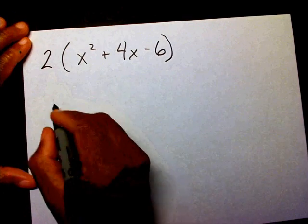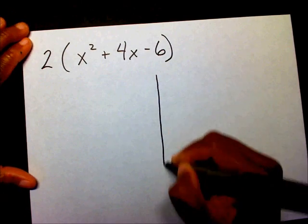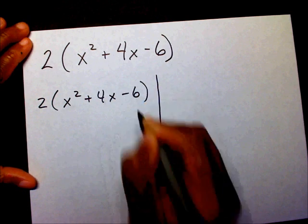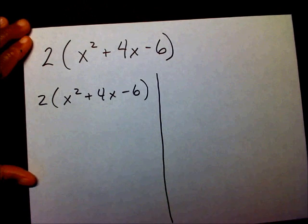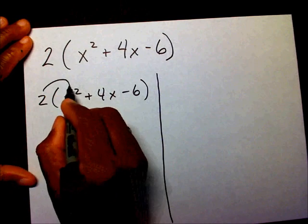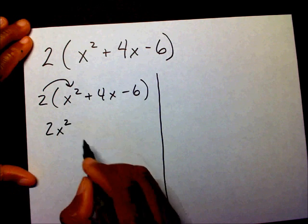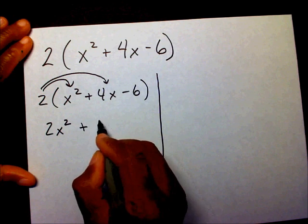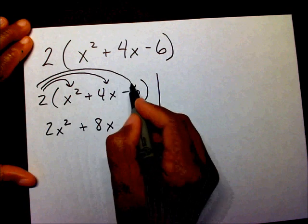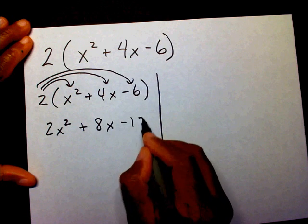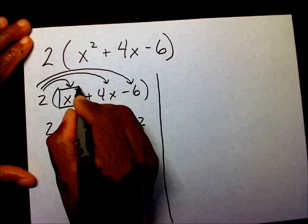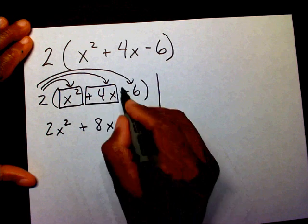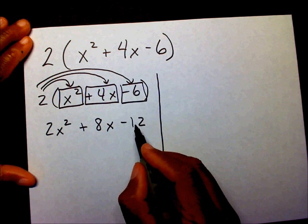So I have 2 times x squared plus 4x minus 6. I'm going to multiply 2 times x squared, which is 2x squared. Then 2 times 4x, which is 8x. Then 2 times negative 6, which is negative 12. I multiply the 2 times each term.